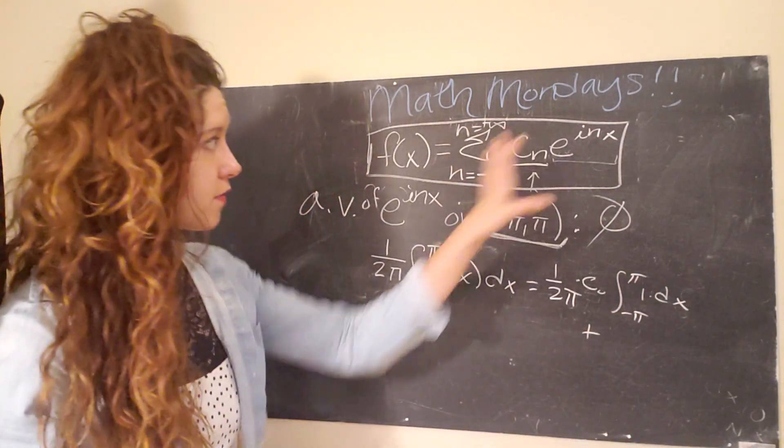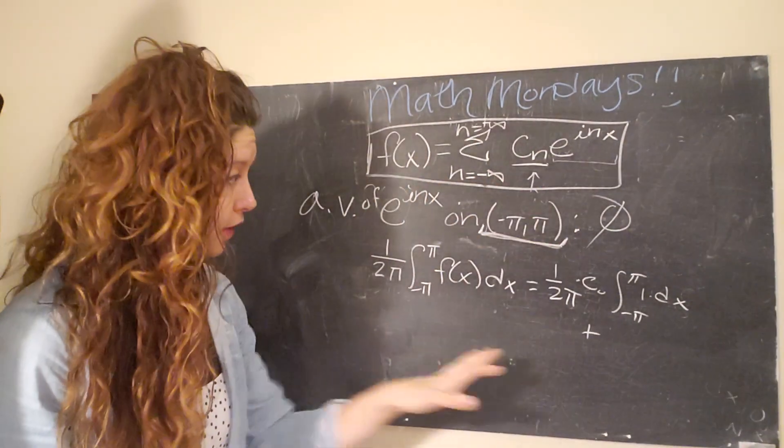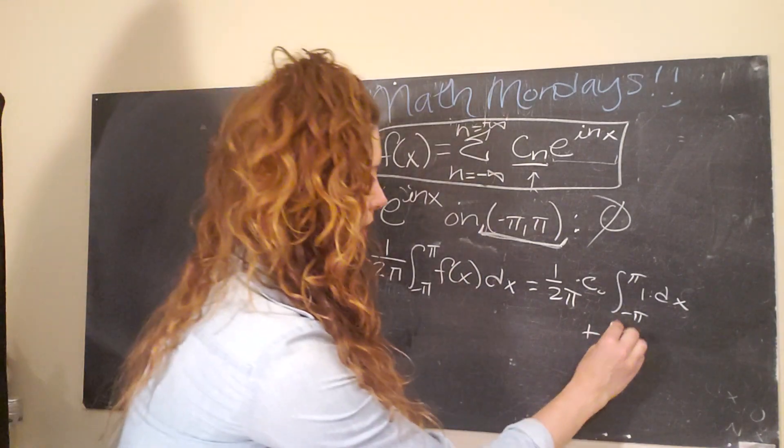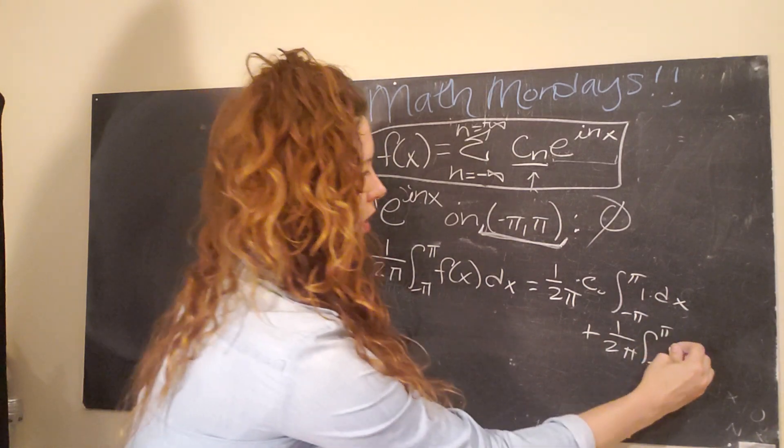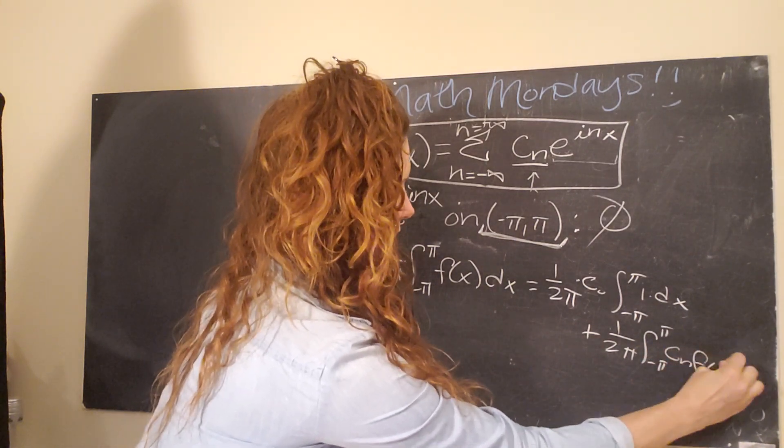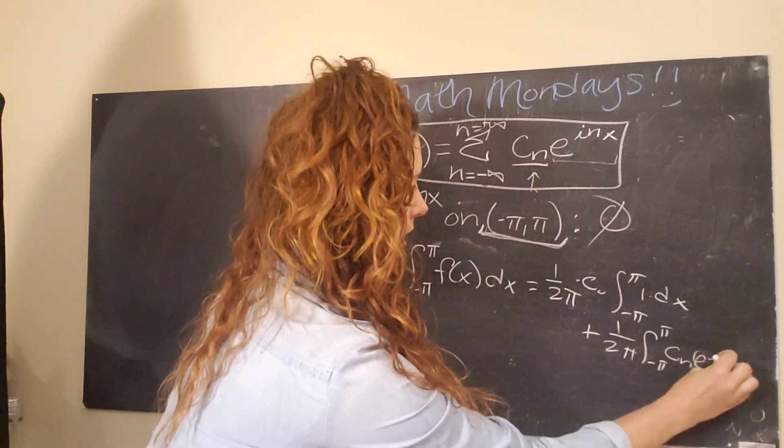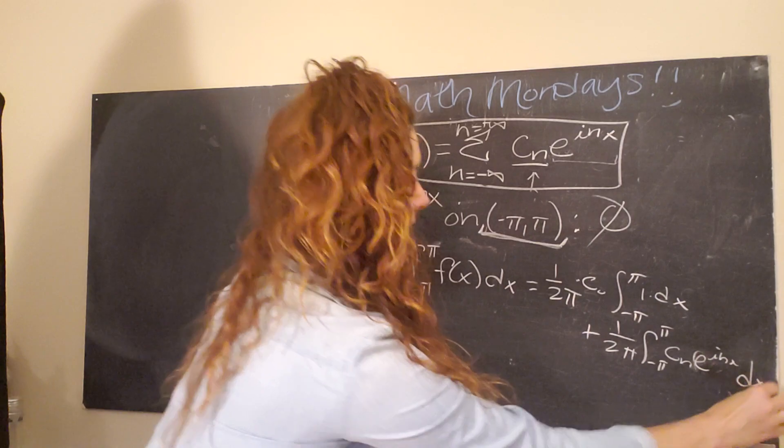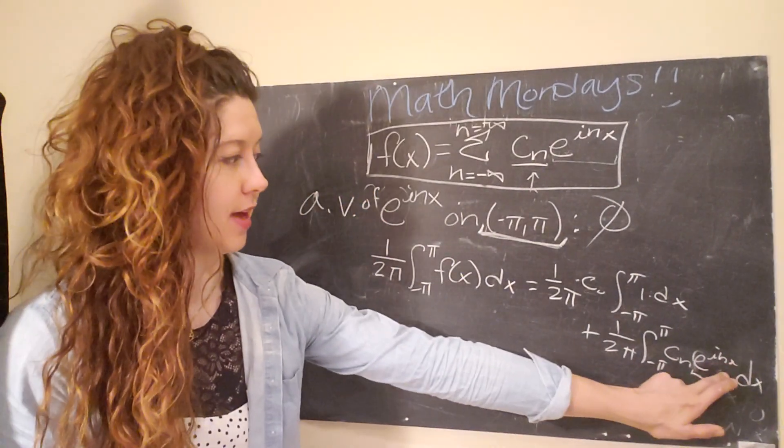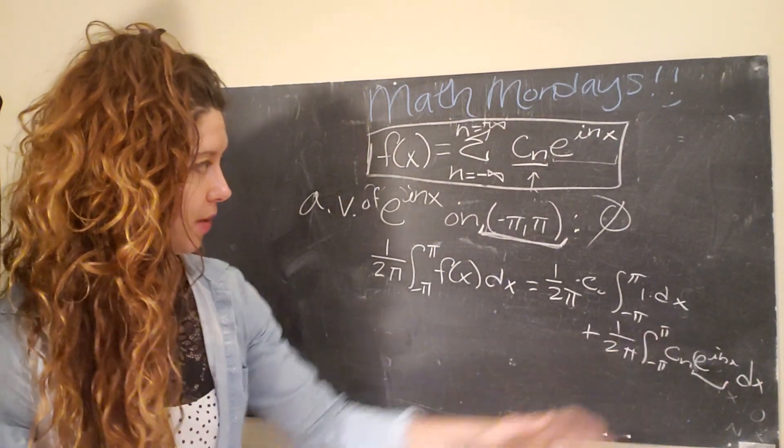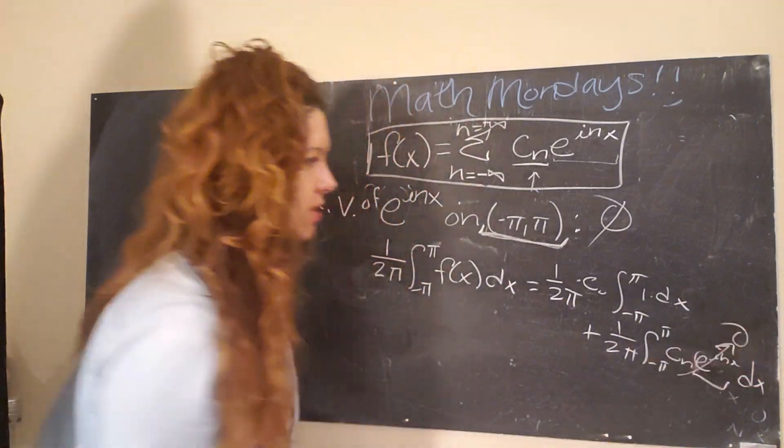And so there actually is no e term multiplied by our constant. So the first term I'm going to write separate as one over 2 pi times c naught from negative pi to pi of one times dx. And the rest of the terms for cn, both from negative infinity to infinity, are going to be of the form one over 2 pi negative pi to pi of cn e to the inx dx. Okay. But wait a second. Didn't we just say that the average value of this function from negative pi to pi was zero? Well, yeah. Okay. So that makes our lives easier. Boom. That goes to zero.